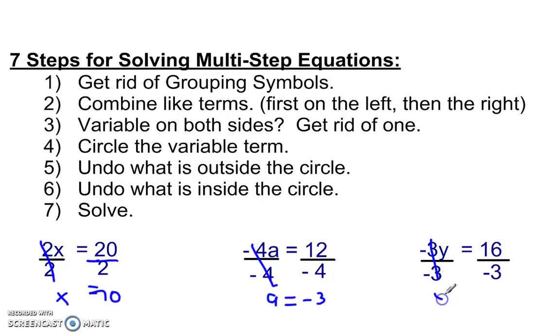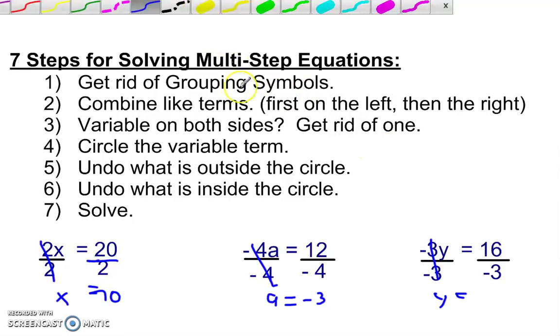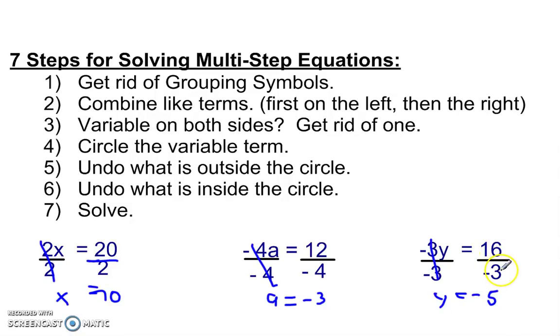This cancels out. Now, notice your answer isn't always going to be a beautiful integer. Sometimes you'll get a decimal. I recommend staying with a fraction, because it makes it easier. 3 goes into 16 five times. Your answer is going to be negative, so 5. And 3 times 5 is 15, so that leaves 1. 5 and 1 third.